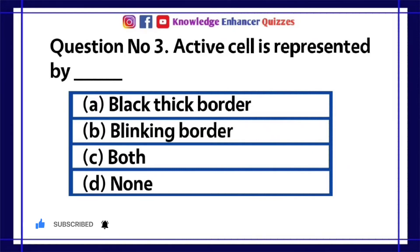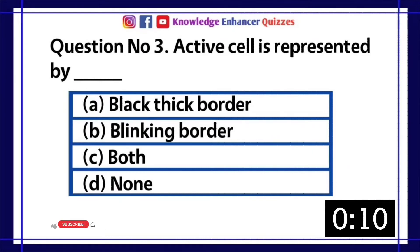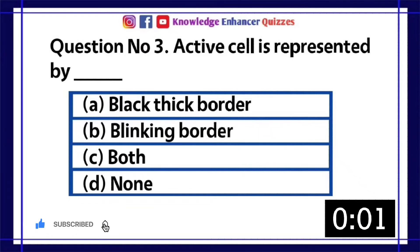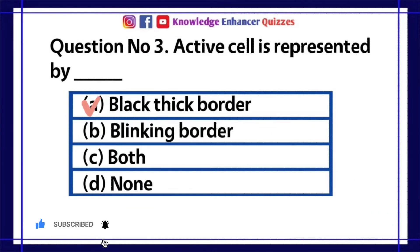Question number 3: Active cell is represented by dash. A. Black thick border  B. Blinking border  C. Both  D. None. Option A is the right answer.